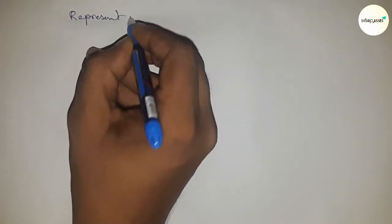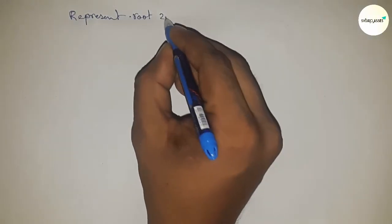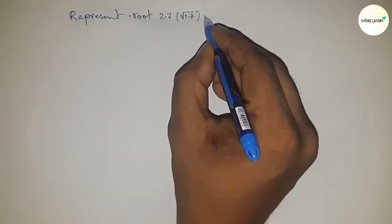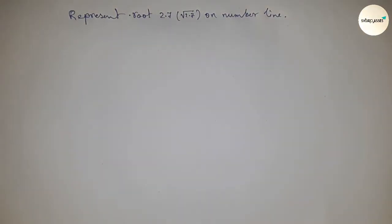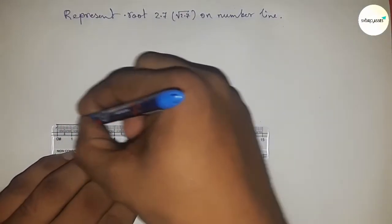Hi everyone, welcome to accessory classes. Today we're talking about the representation of root 2.7 on a number line. Before starting the video, please subscribe to the channel and press the bell icon.